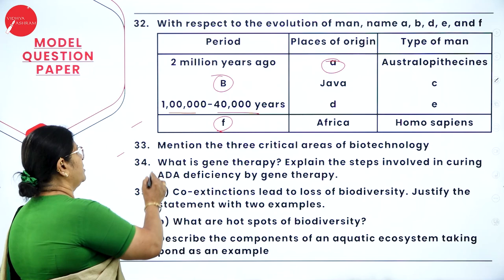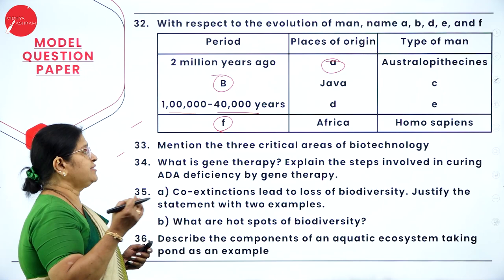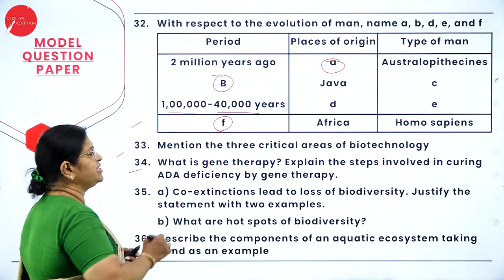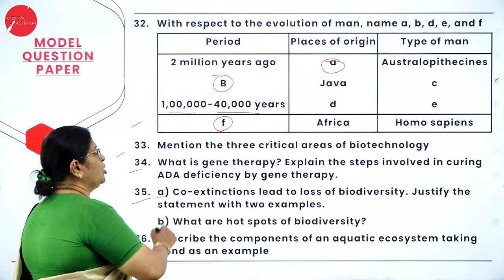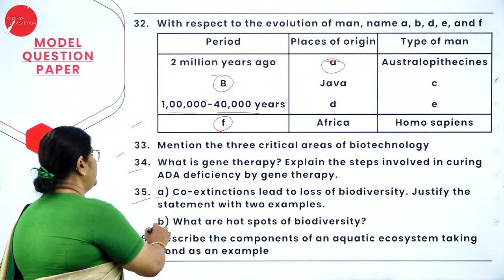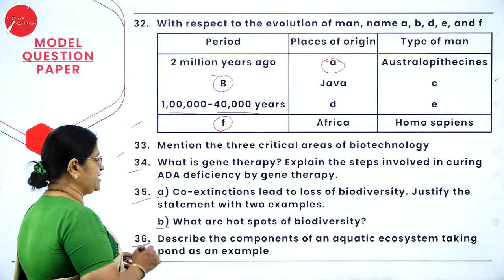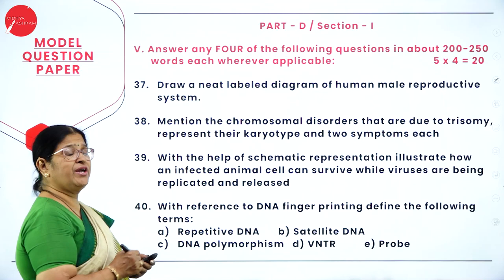Question 33: mention the three critical areas of biotechnology. Question 34: what is gene therapy? Explain the steps involved in curing ADA deficiency by gene therapy. Question 35 (split): A) co-extinctions lead to loss of biodiversity — justify with two examples; B) what are hotspots of biodiversity? Question 36: describe the components of an aquatic ecosystem taking a pond as an example.